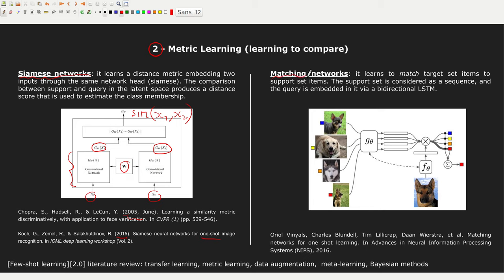A similar approach within metric learning is matching networks. The idea is that you want to match the target and the support, treating the support as a sequence so that you can apply a bidirectional LSTM on it. It's slightly more complex but the underlying idea is very similar: you learn a distance or similarity between support and query so that you can assign a query image to a class in the support set.